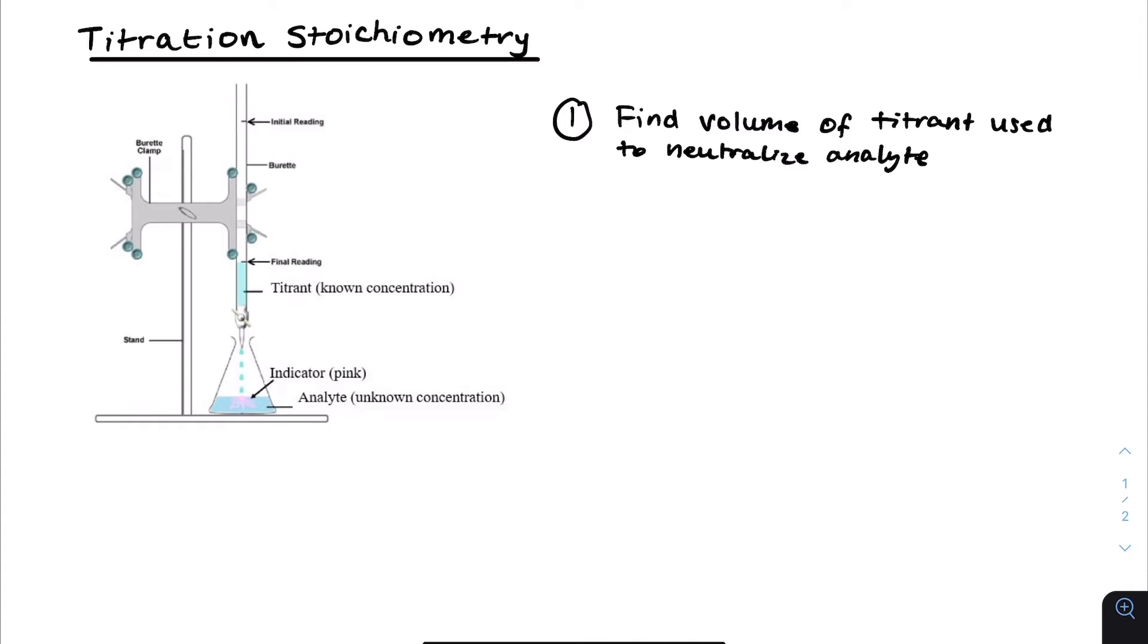So the first step is to find the volume of titrant used to neutralize the analyte. That can be found by taking the final reading when the solution has been neutralized, and subtracting the initial reading from it. Then, the next step is to find the moles of titrant.